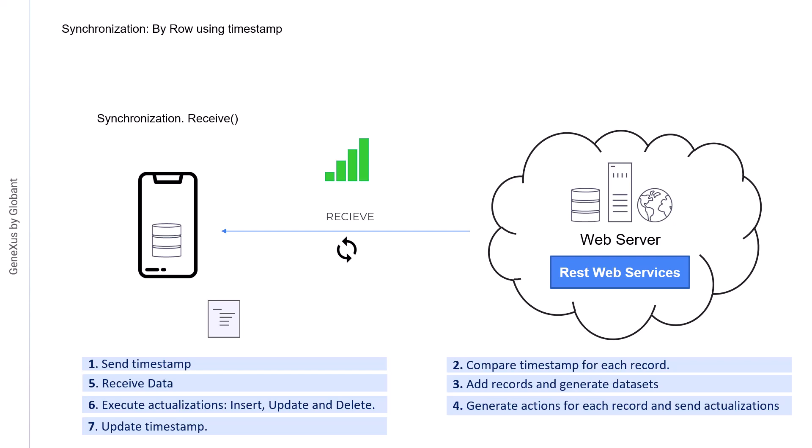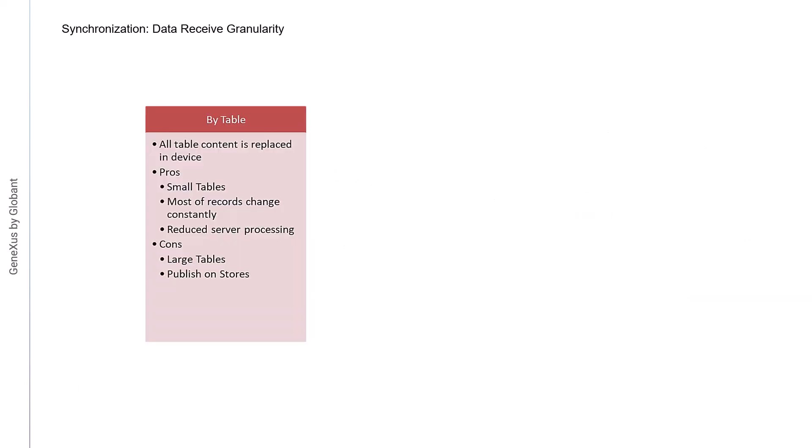Let's review the synchronization mechanisms we've just seen. Regarding by table synchronization, when the server determines that a table has been modified, that table will be sent to the device and will be entirely replaced there. A hash will be used for each table and for each device. This mechanism is useful when tables are small or when most records are frequently changed. For example, we may use it in an internal mobile system where salespeople have a list of clients to visit that changes every day. This option has a disadvantage when the tables are too big, because the data traffic will be more significant. It would also not be advisable in cases where the application is going to be massively used.